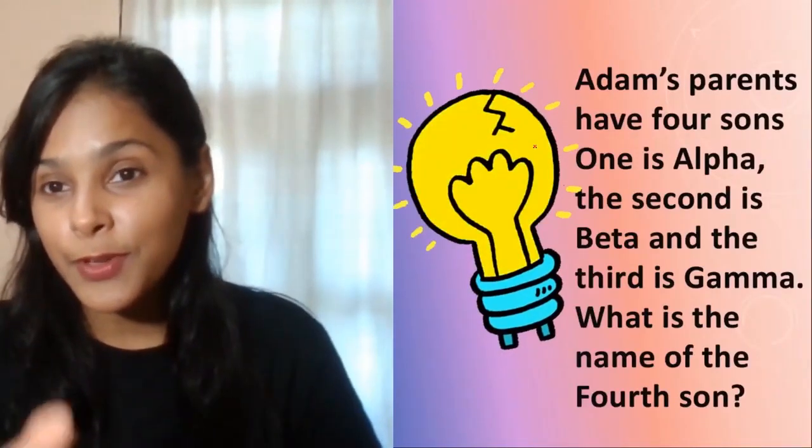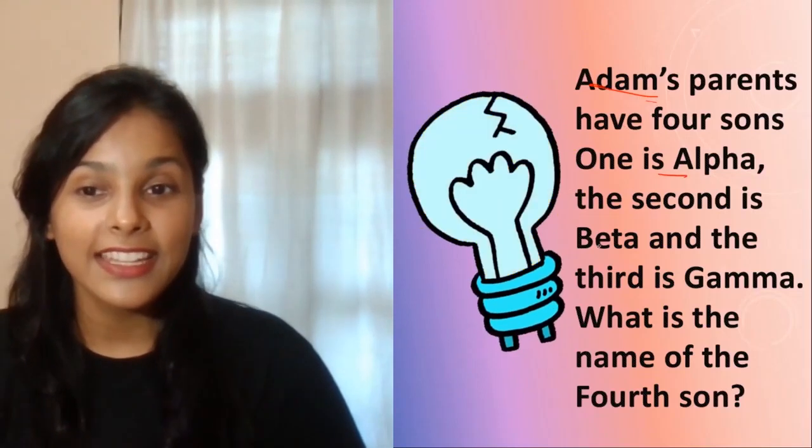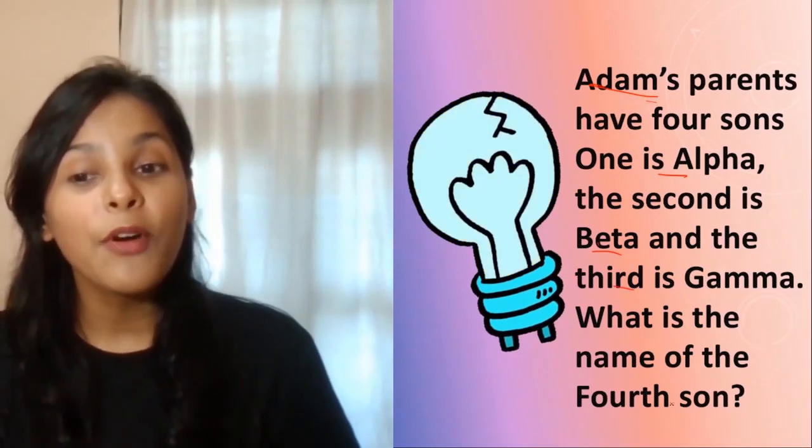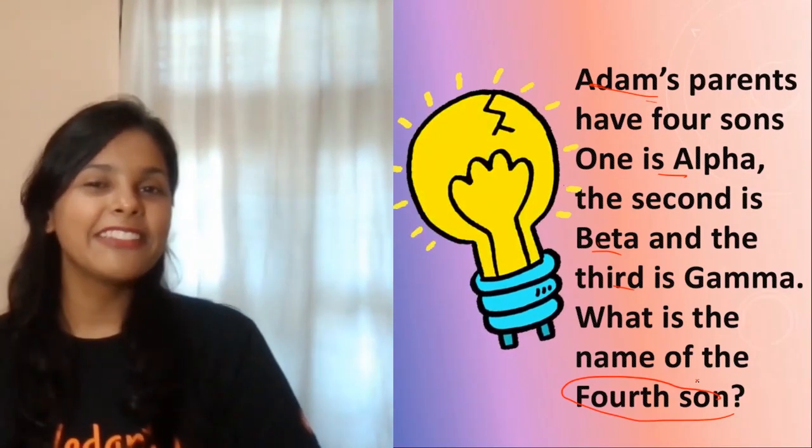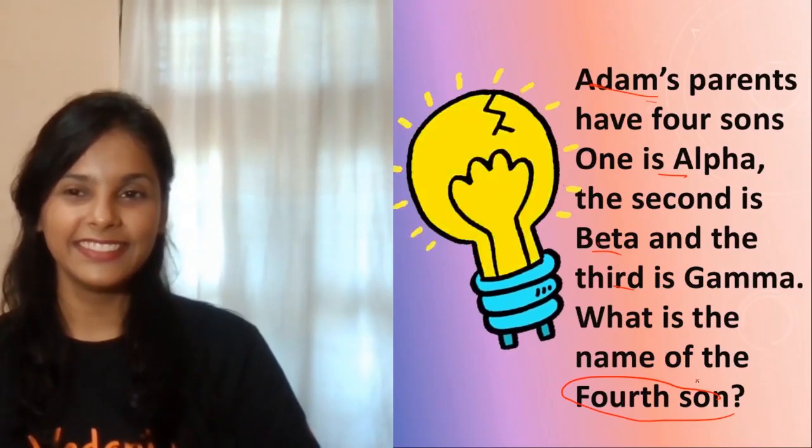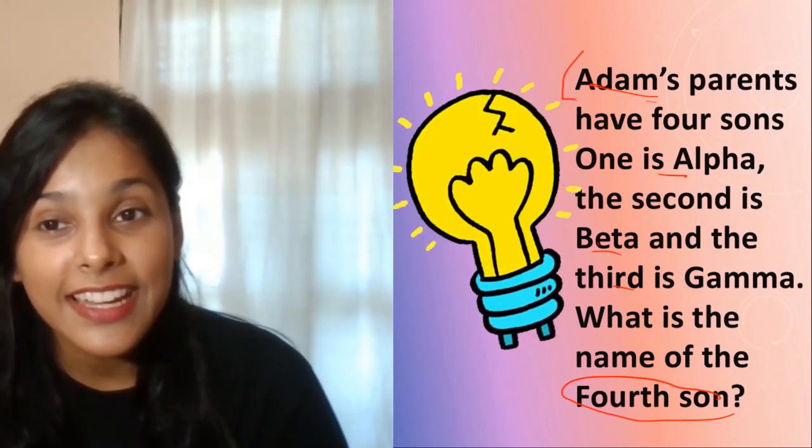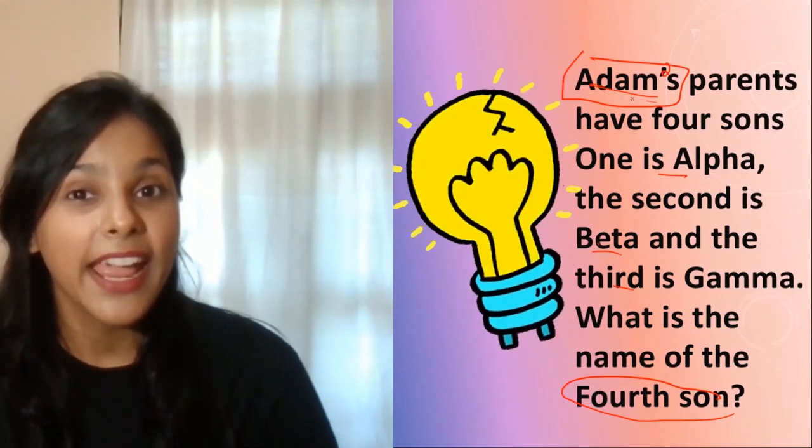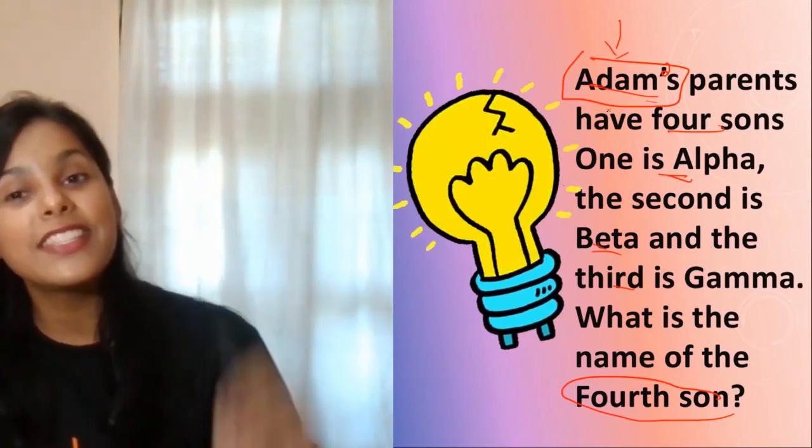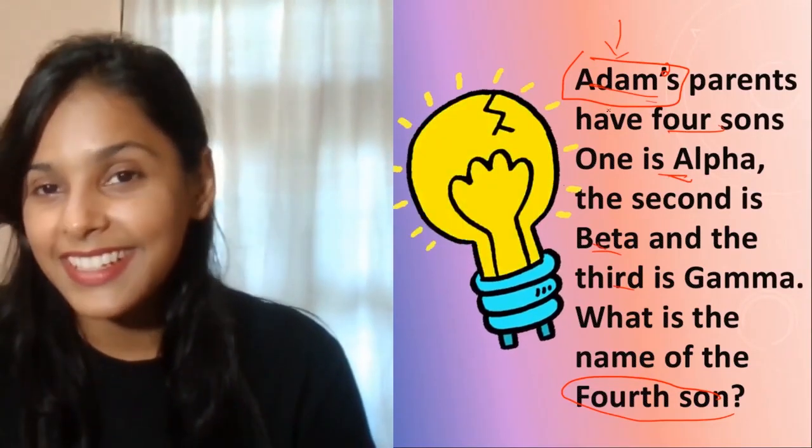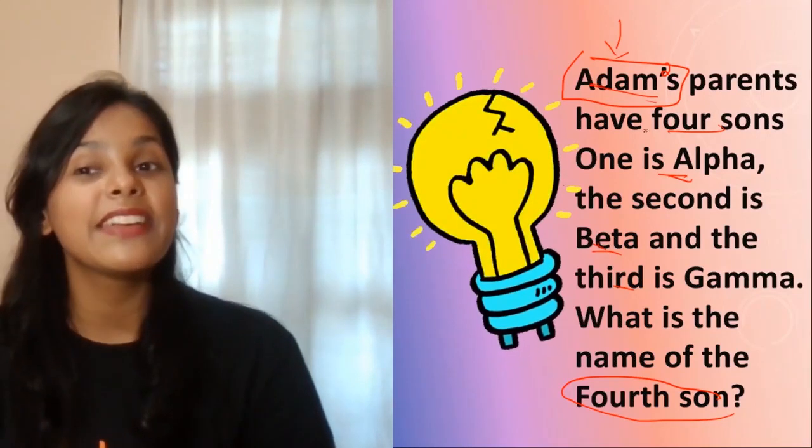Next puzzle is in front of you. There's Adam, a child. His parents have four sons: first is Alpha, second is Beta, and third is Gamma. What is the name of the fourth son? The answer is hidden in the question itself—that's the biggest hint I have given you. Tell me guys. I'll give you 10 seconds to solve it. Now let me crack this. The question says that Adam's parents have 4 sons: Alpha, Beta, Gamma, so the fourth is Adam himself. Adam is the fourth son. So the name of the fourth son is Adam itself. It was not written that Adam's fourth son, it's Adam's parents who have four sons.